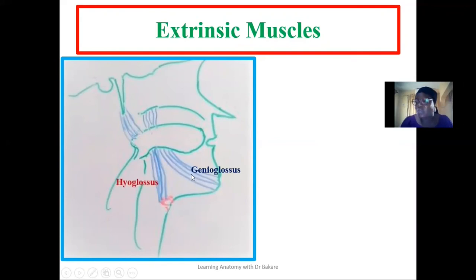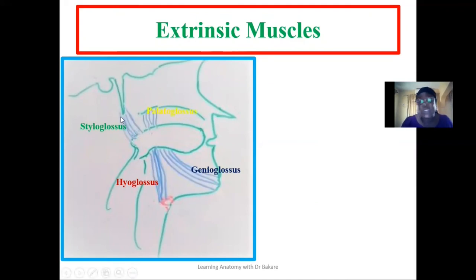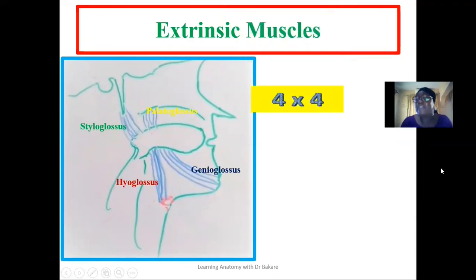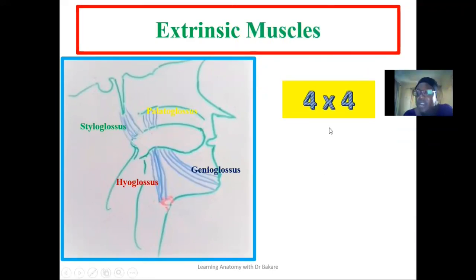We have the hyoglossus muscle, which helps to connect the tongue with the hyoid bone. We have the styloglossus muscle, which connects the styloid process of the temporal bone to the tongue. Then we have the palatoglossus muscle, which helps to connect the soft palate with the tongue. So in total, we have four intrinsic muscles and four extrinsic muscles.